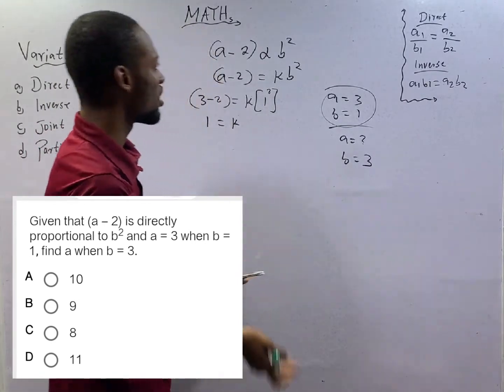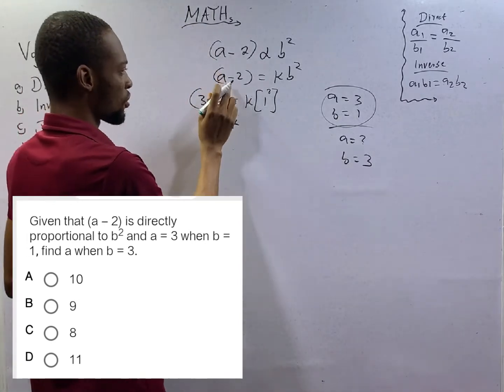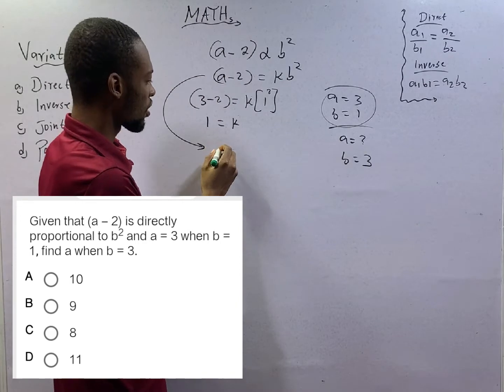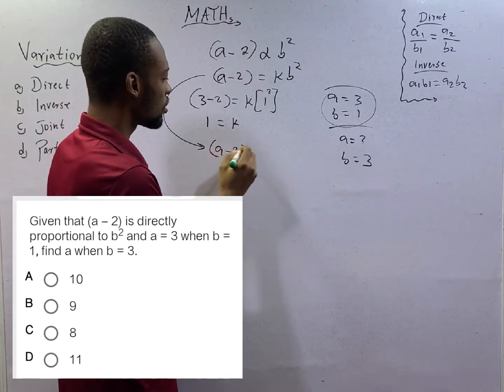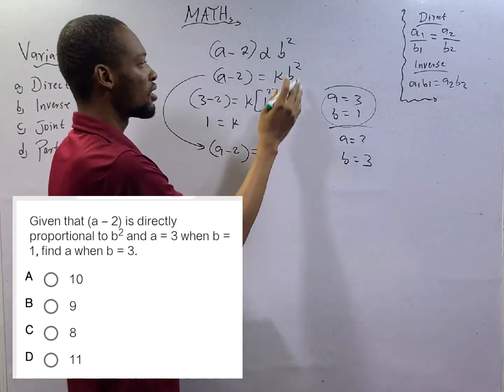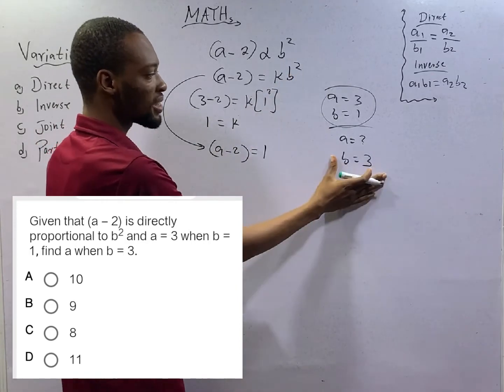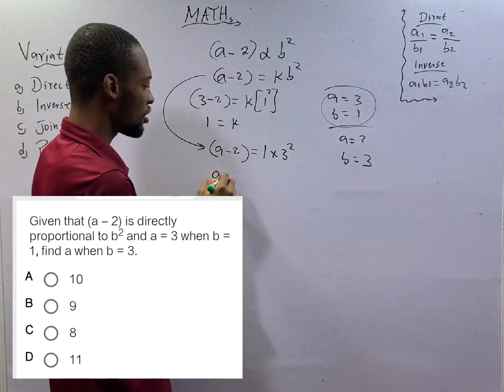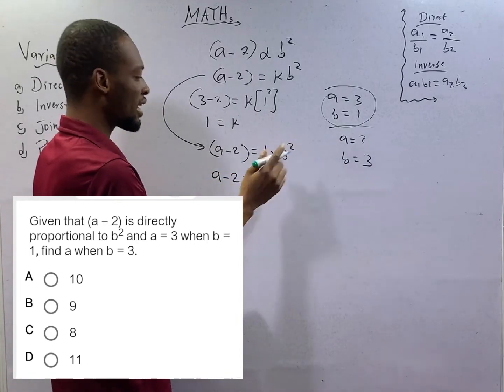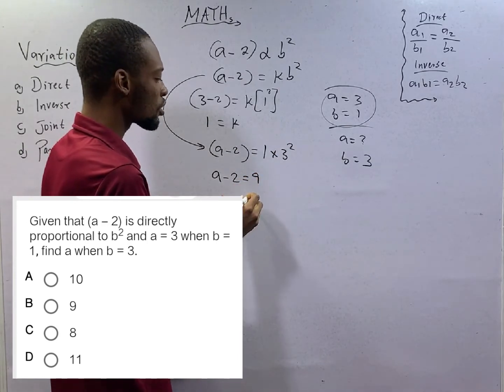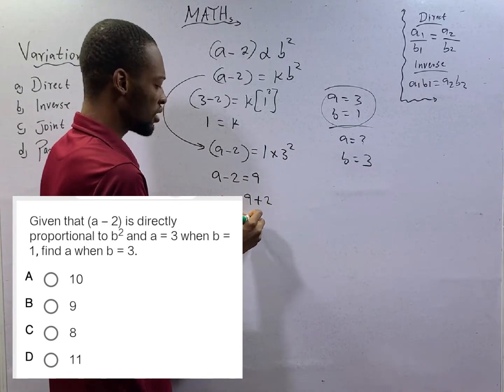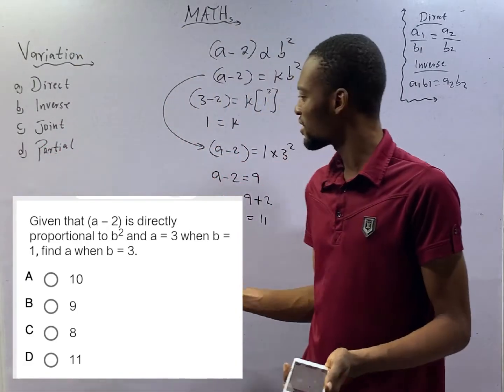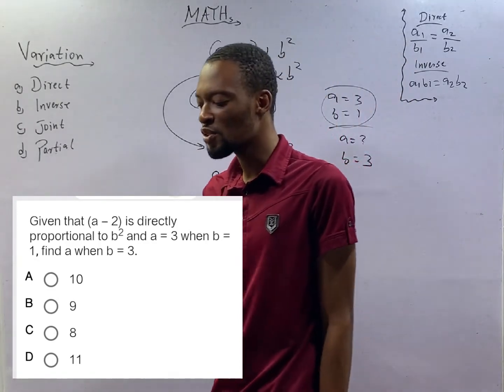Now that we have gotten the constant, we have to go back to this equation once again to look for the second value of a. That would be (a - 2) equals constant 1 times b squared. b is now 3 times 3 squared. This is (a - 2) equals 1 times 9 is 9. a equals 9 plus 2. That will give you 11. So 11 option D is the correct answer. We can see that variation is so so sweet.